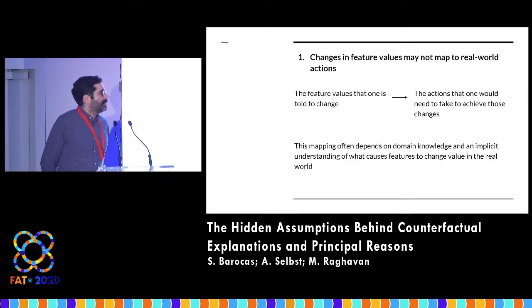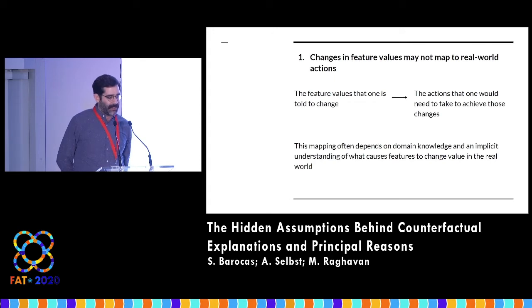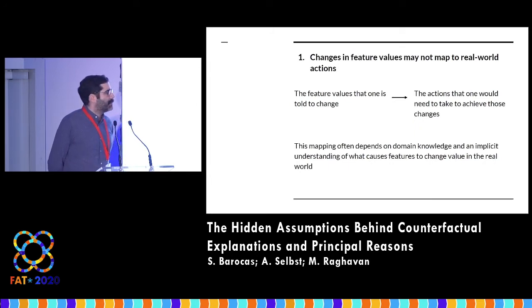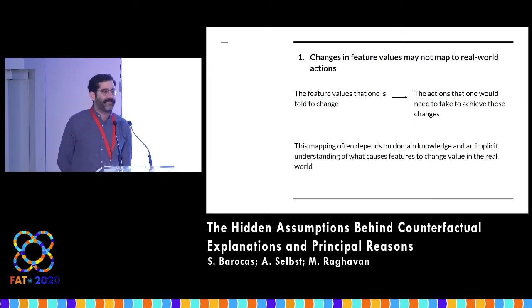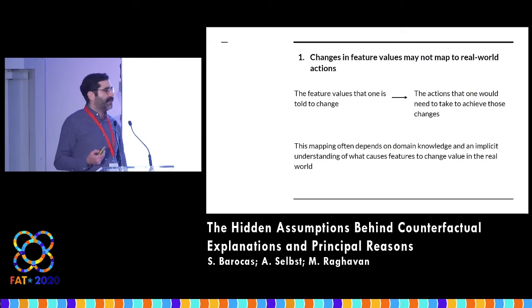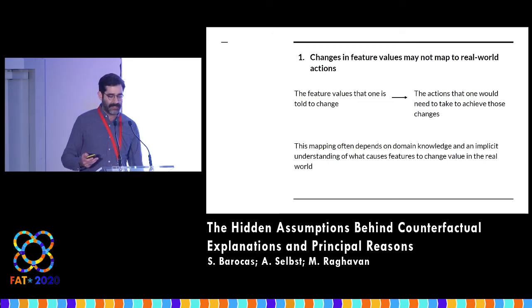The first assumption: the form of explanation often takes the type that says 'change this particular feature by this amount' — increase your income by X amount. But in the real world, there often isn't a perfect correspondence between the feature change you want to make and an action you can take to change that feature. Most of the work to date, that mapping has often been pretty clear, but we can think of many examples where that's not the case.